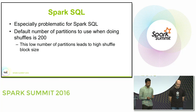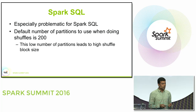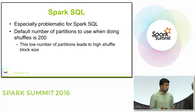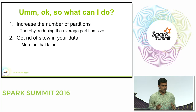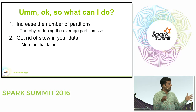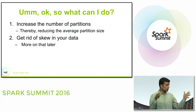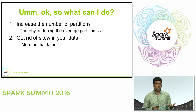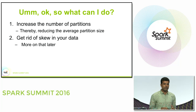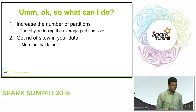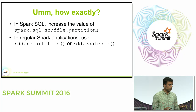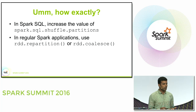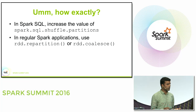This is especially problematic for Spark SQL because the default number of partitions is 200 — a particularly low number, leading to a higher average block size. The fix is to increase the number of partitions to reduce average partition size. In Spark SQL, use the spark.sql.shuffle.partitions property, which defaults to 200 and should be bumped up. In regular Spark, use repartition or coalesce.